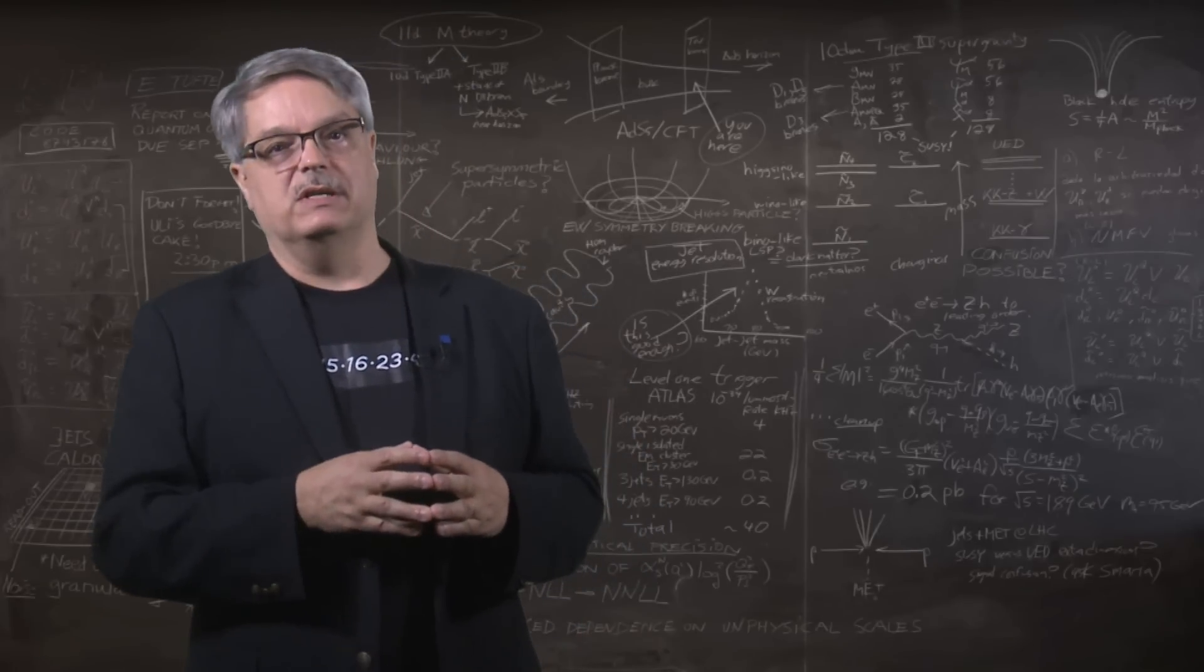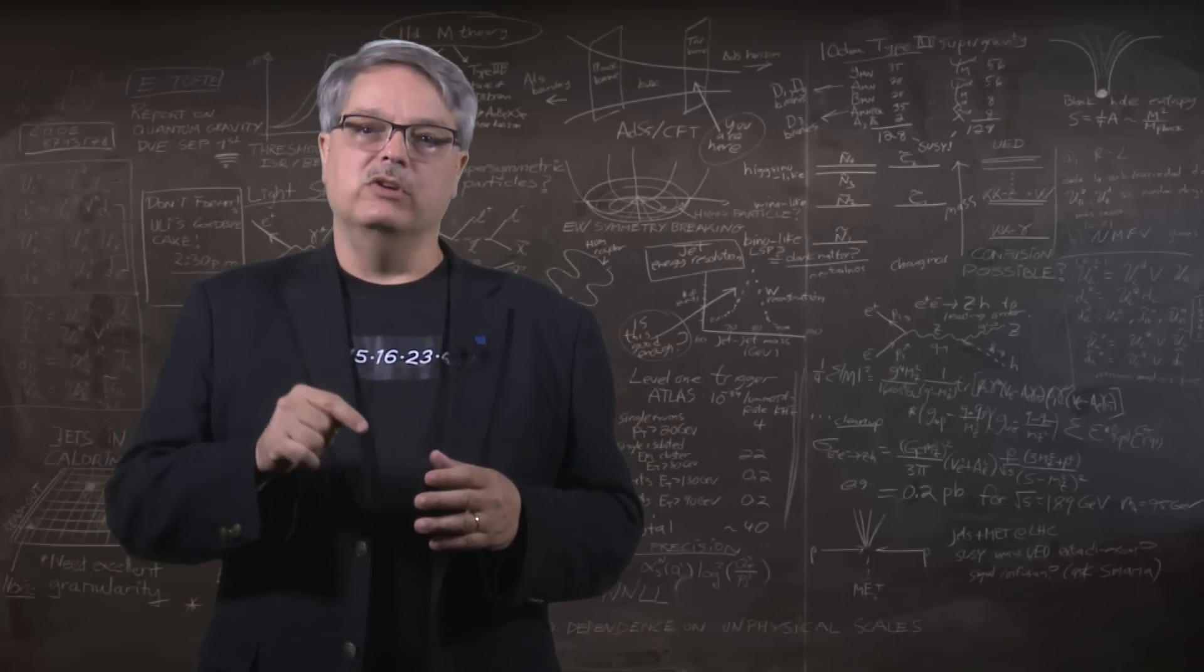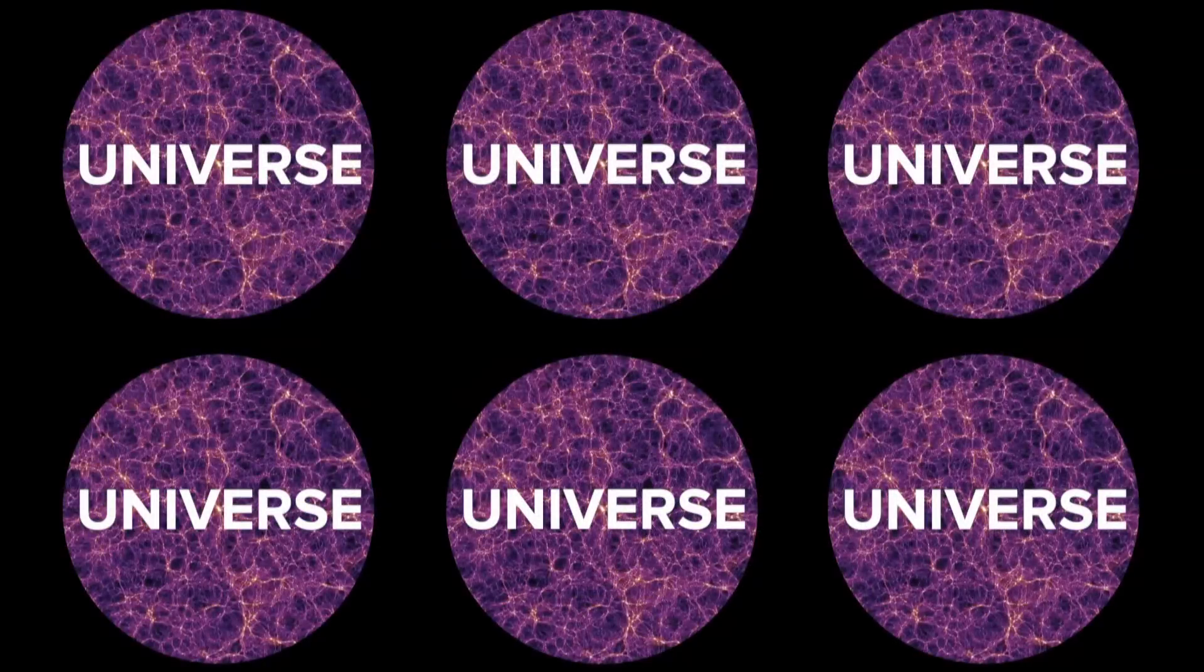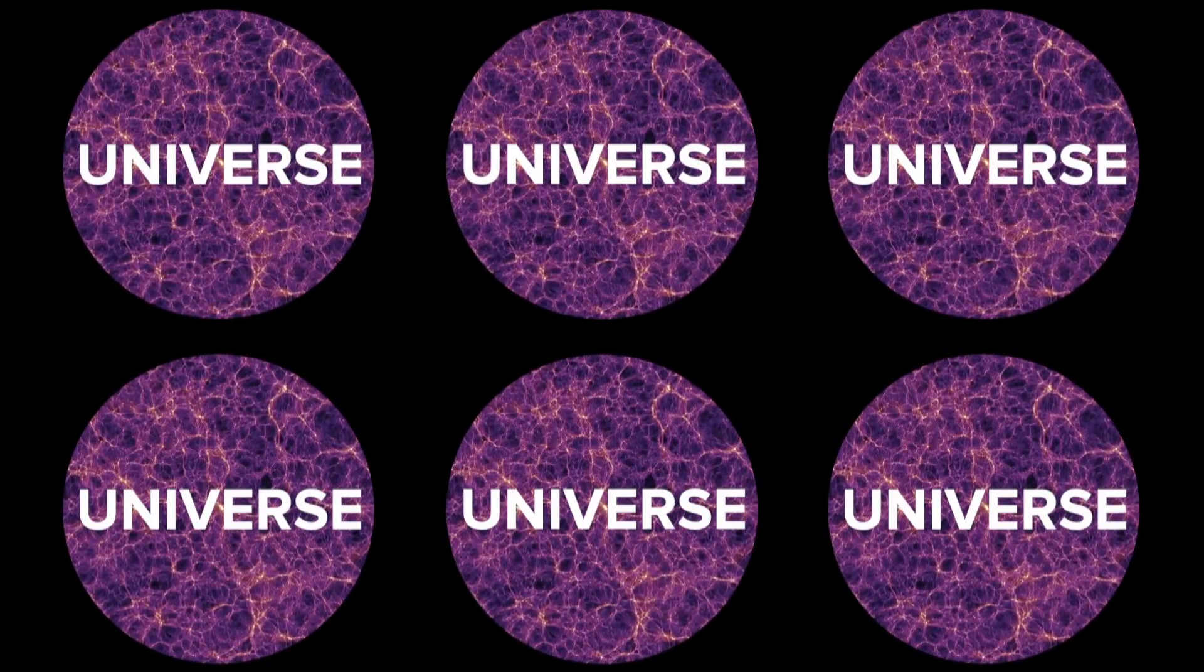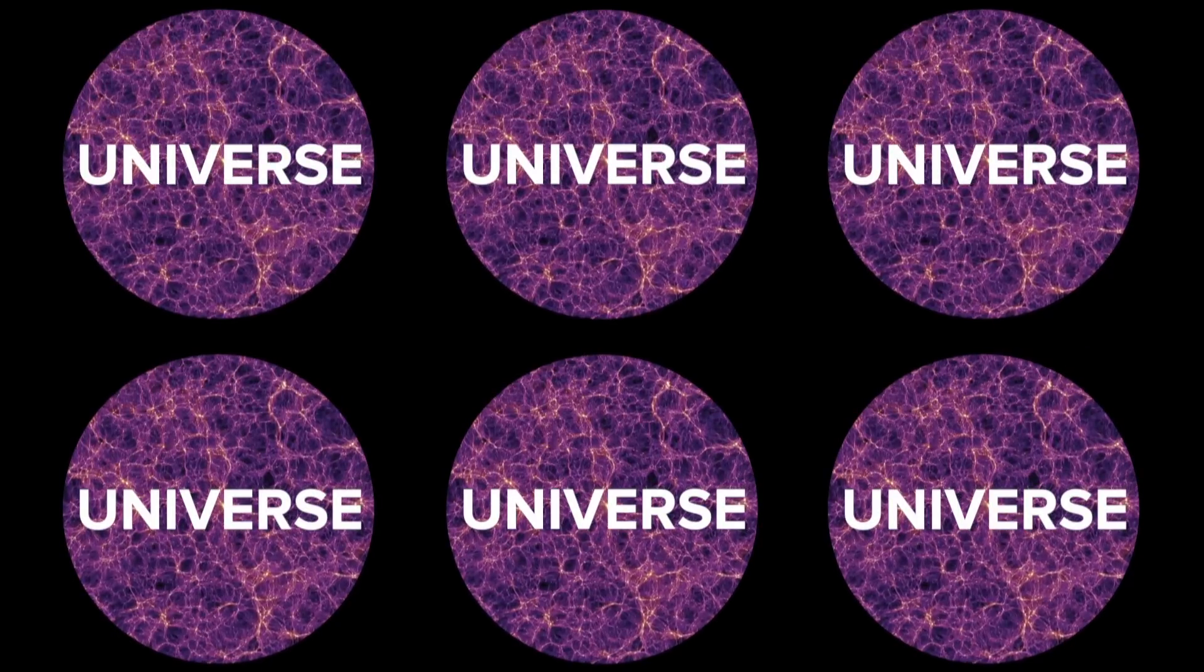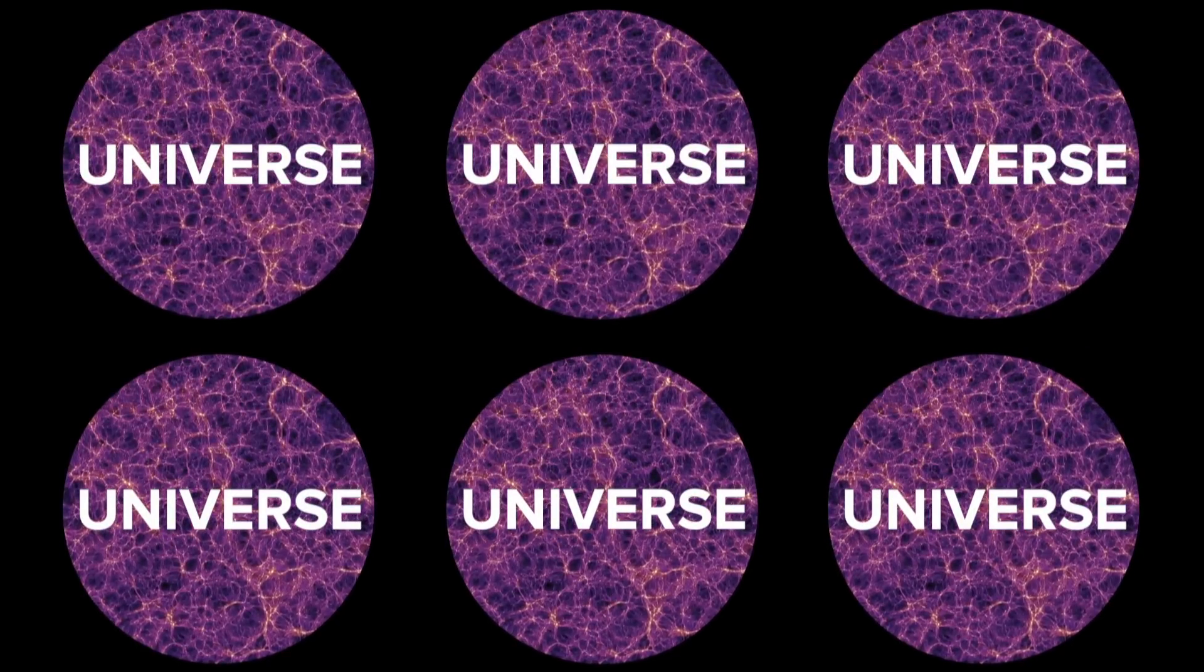So that's where multiverses come in. Maybe not one universe exists, but maybe countless, perhaps an infinite number. That way, in all of the countless universes, all countless choices of parameters actually occur. In some universes, neutrons are heavier than protons, and in some, protons are heavier than neutrons.